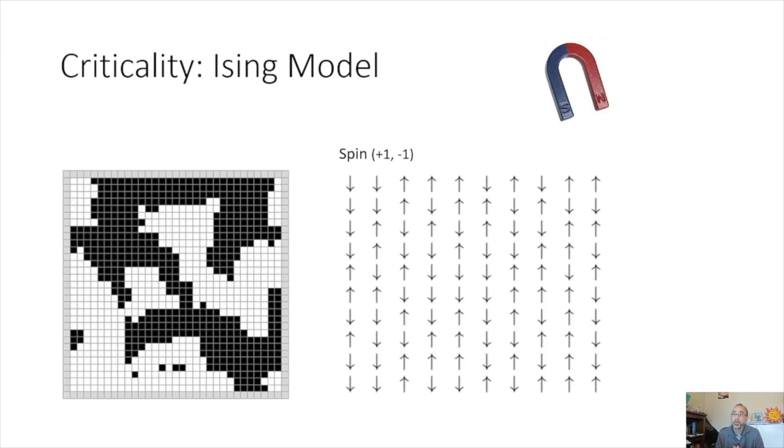To me, probably the most useful analogy or theory from complexity theory is criticality theory. And an example of criticality theory is the Ising model. Hopefully, you'll get an understanding of what the criticality theory means based on this example.